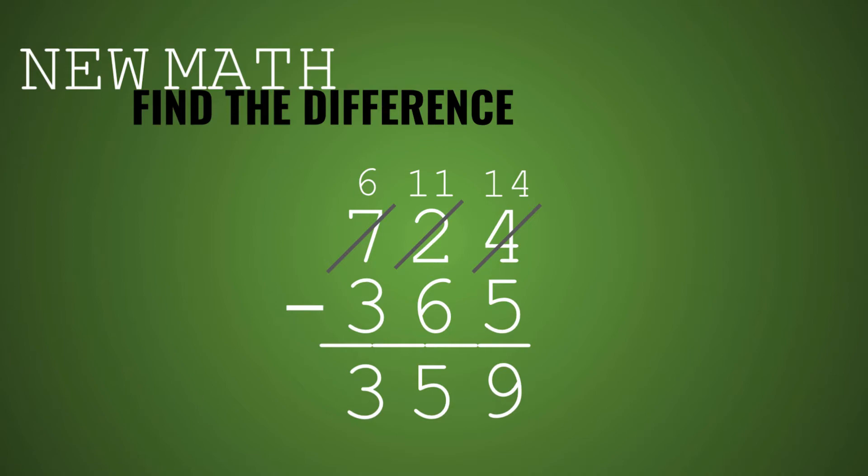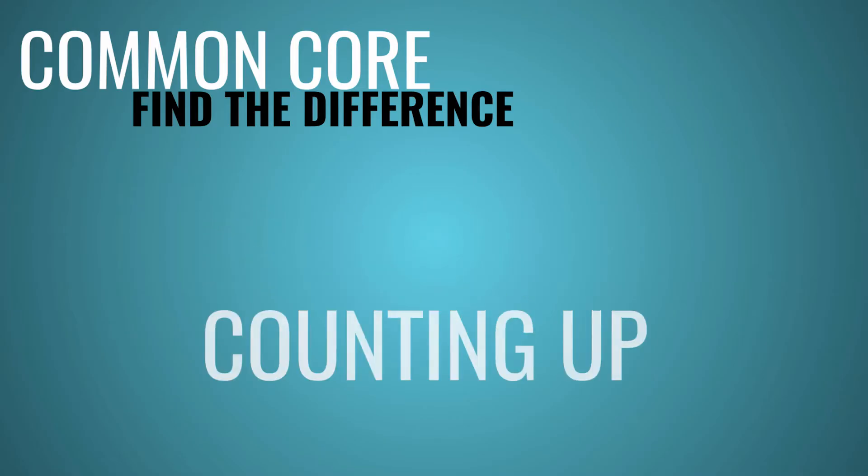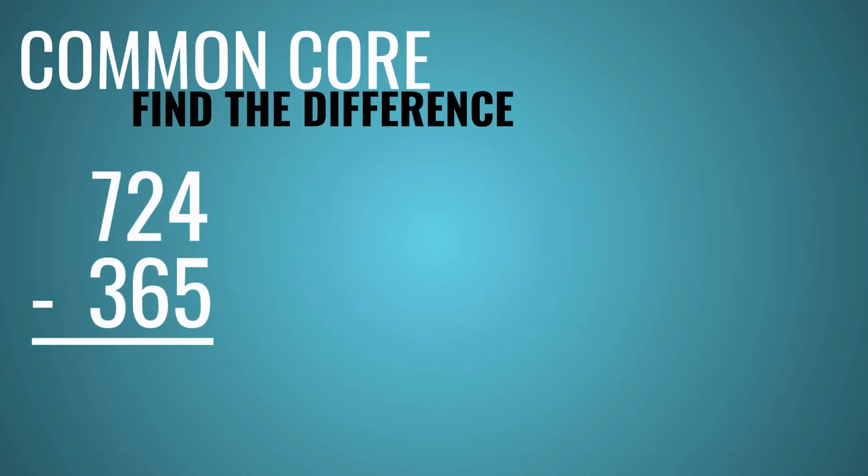So the Common Core method, this is just one way to solve the difference. One of the strategies you can use with the Common Core method to find the difference is counting up. And I say one of the strategies because with the Common Core method, there are multiple strategies for multiple types of problems. Now this type of problem looks very different from the others.